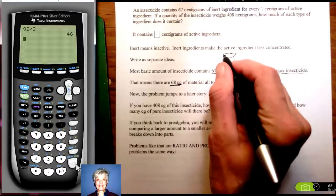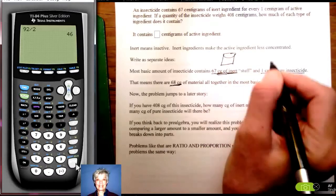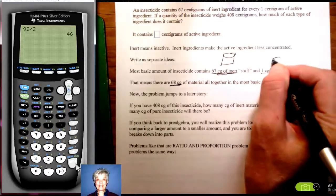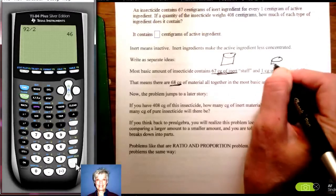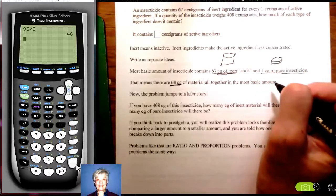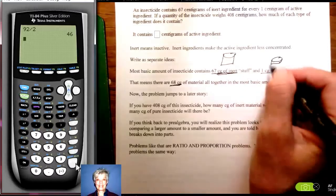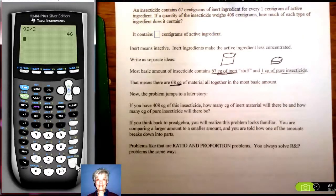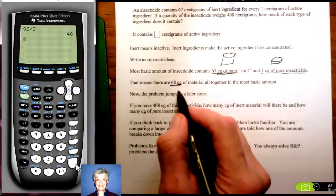Now you've got more of the inert material than you do of the active. Those are supposed to be containers. They're not very convincing, are they? But together you've got 68. If you've got 67 inert and one pure then you've got 68 altogether.